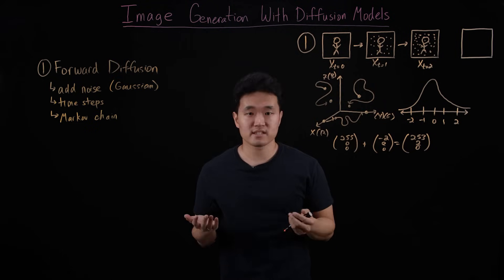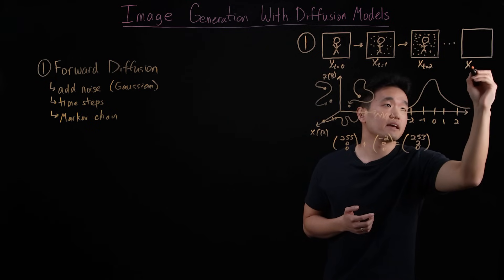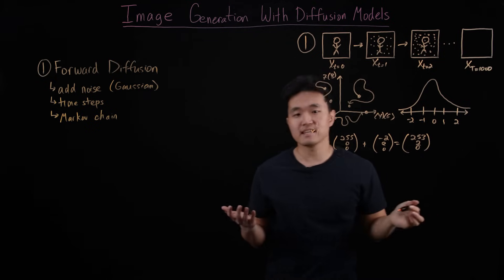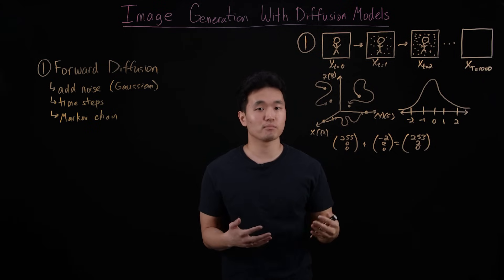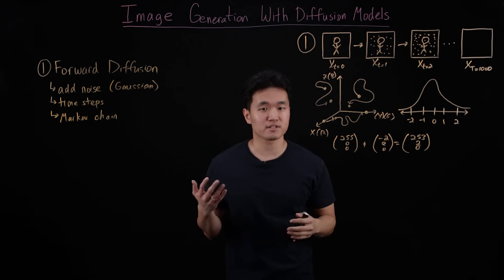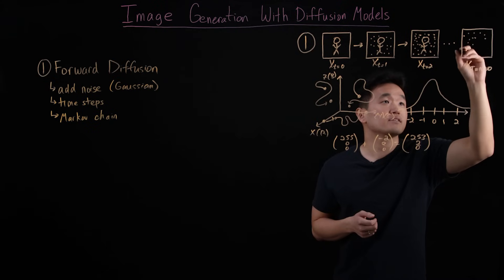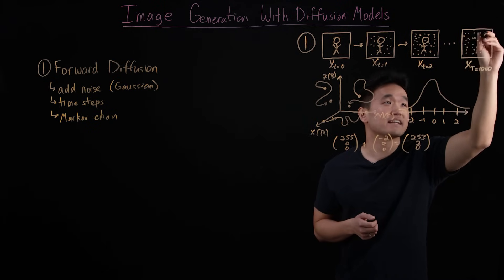If we repeat this process many times, say over a thousand time steps, what happens is that shapes and edges in the image start to become more and more blurred, and over time our person completely disappears, and what we end up with is completely white noise or a full screen of just TV static.